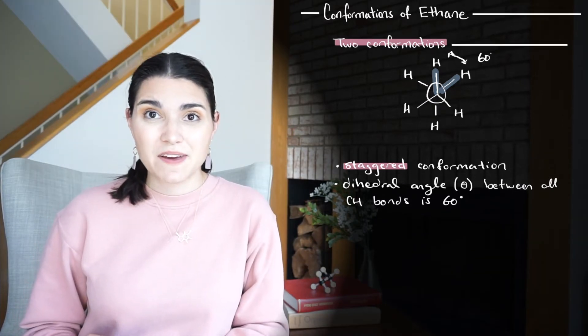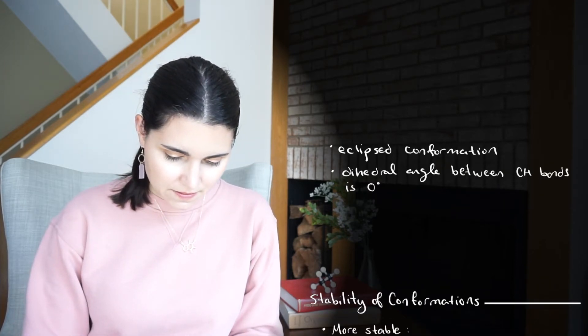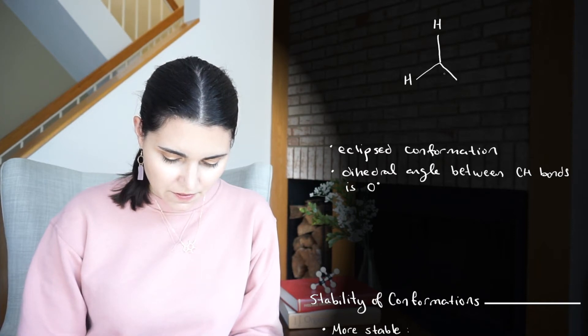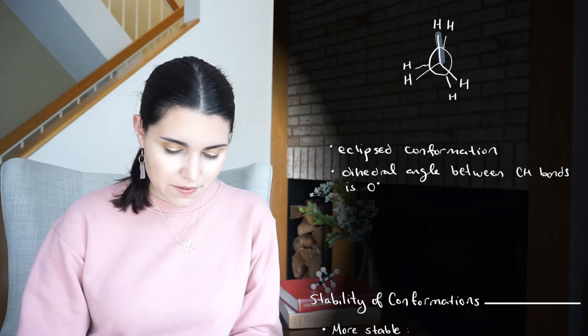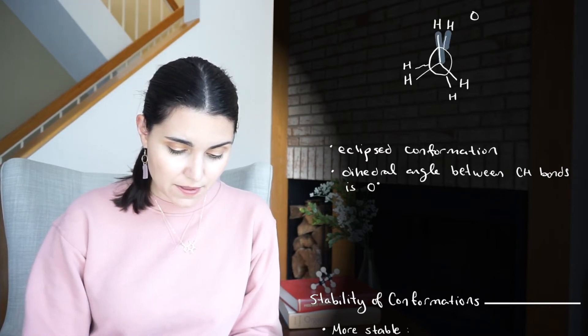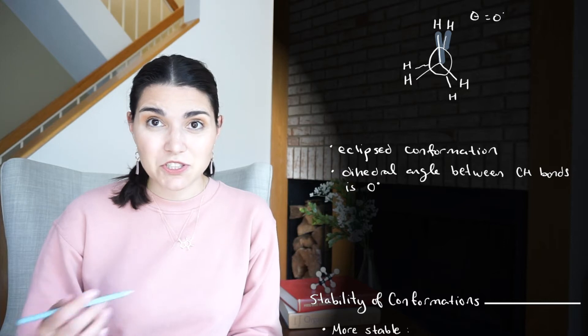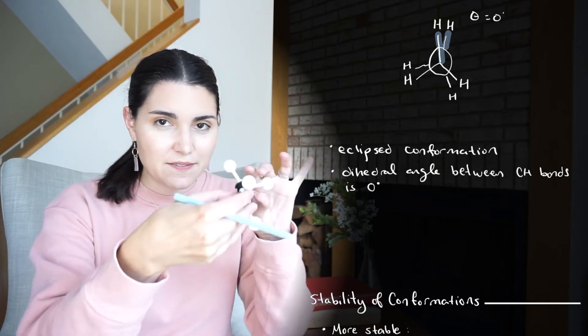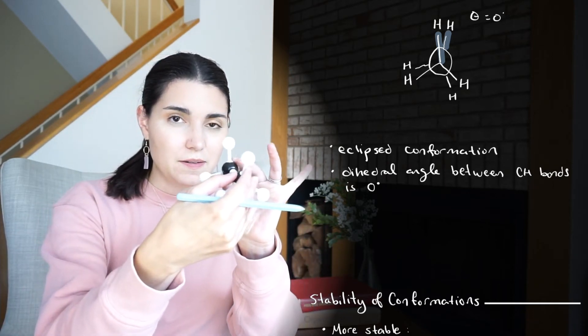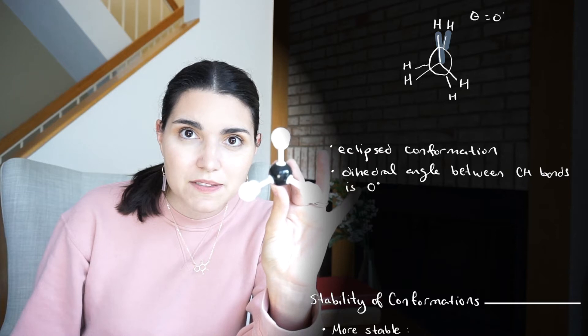The other important conformation of ethane is the eclipsed conformation. So let's draw the eclipsed conformation. Here we have our front carbon with its hydrogens and then our back carbon. In the eclipsed conformation, the dihedral angle between the CH bond and this CH bond is zero degrees. We can't really draw a zero degree angle because we want to show both substituents, so we just draw them slightly offset like this. But what it looks like in real life is if I turn my substituents so that they line up on this ethane, it looks like this. You can't see the back substituents because they're right behind the front ones.